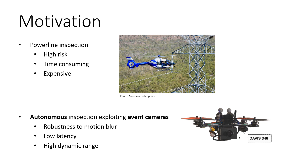In this work, we propose a method that uses event cameras to robustly track power lines. Event cameras are robust to motion blur, have low latency and high dynamic range. Such properties are advantageous for autonomous inspection of power lines with drones, where fast motions and challenging illumination conditions are ordinary.